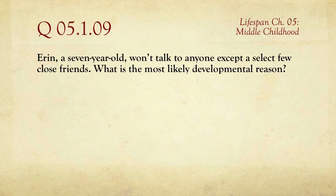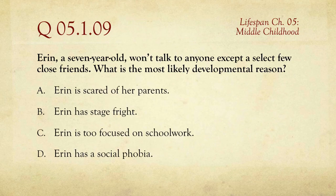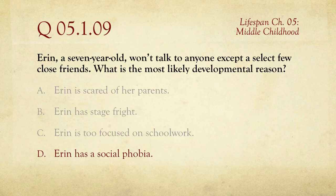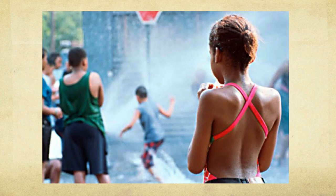Question number nine: Erin, a seven-year-old, won't talk to anyone except a select few close friends. What is the most likely developmental reason? The choices are Erin is scared of her parents, she has stage fright, she's too focused on schoolwork, or she has a social phobia. Although you have precious little information to go on, the answer marked correct is that Erin has a social phobia. Anxieties and social disorders are not that uncommon among children — childhood can be a terribly stressful and difficult time for kids who have a very hard time getting along with others.